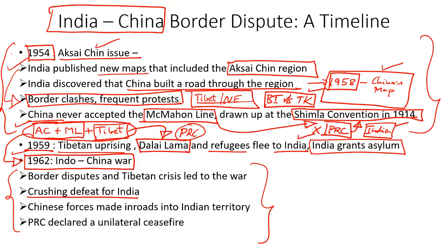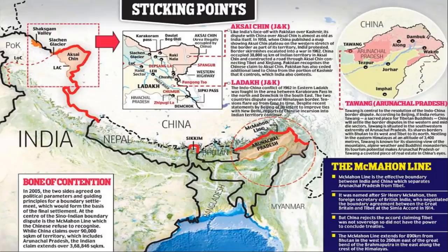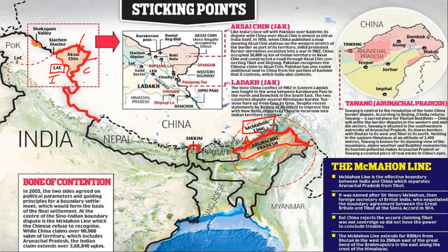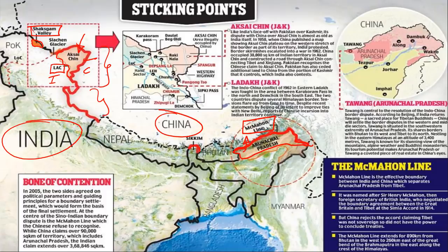In 1954, both countries signed the Panchsheel agreement, also known as the Five Principles of Peaceful Coexistence. But seeds of suspicion led to a major border dispute culminating in the 1962 war. After the Panchsheel agreement, the border dispute erupted over Aksai Chin. India published maps showing Aksai Chin as Indian territory, but later discovered China had already built a road through the region and included it in its maps by 1958, leading to repeated border clashes and incursions.